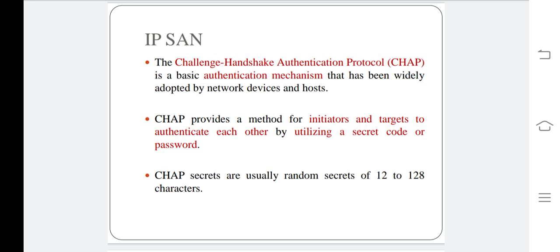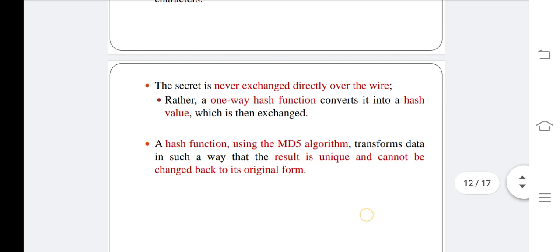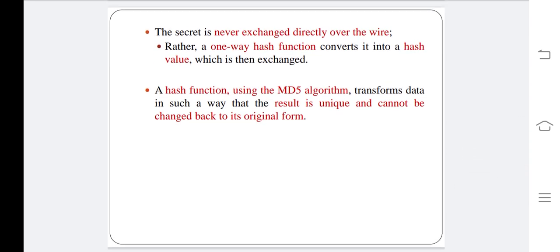The basic security mechanisms in IP SAN are Challenge Handshake Authentication Protocol (CHAP) and iSNS discovery domains. CHAP is a basic authentication mechanism that has been widely adopted by network devices. It provides a method for initiators and targets to authenticate each other by utilizing a secret code or password. The secret is never exchanged directly over the wire; rather, a one-way hash function converts it into a hash value which is then exchanged. A hash function using the MD5 algorithm transforms data in such a way that the result is unique and cannot be changed back to its original form.